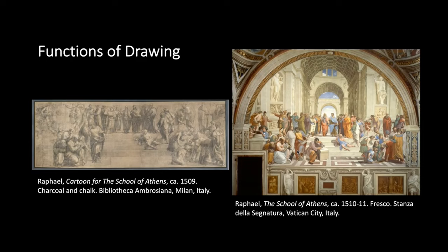What you see in front of you are two different works. The one on your left is a drawing, and the one on the right is a painting. They are both by the artist Raphael — if you've heard that name, it's one of the Ninja Turtles, which means it was probably a famous Renaissance Italian painter. We have Raphael's cartoon on the left for the School of Athens, and on the right we have the School of Athens painting itself. You can see he created with chalk and charcoal a scale drawing of what he wanted to paint.